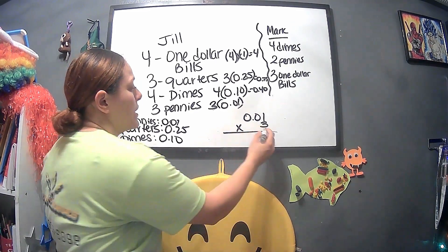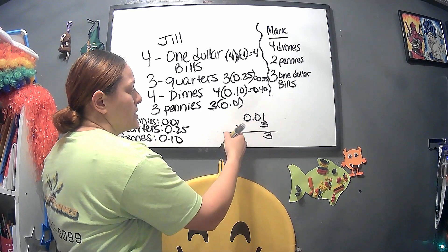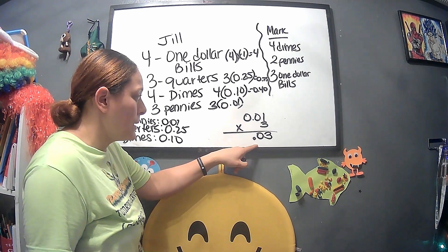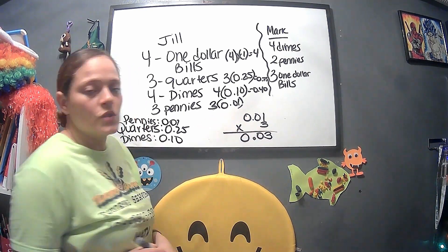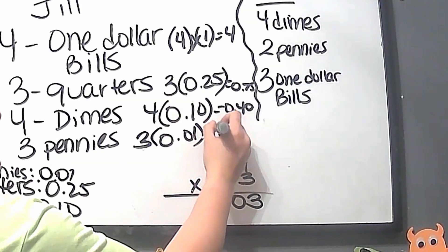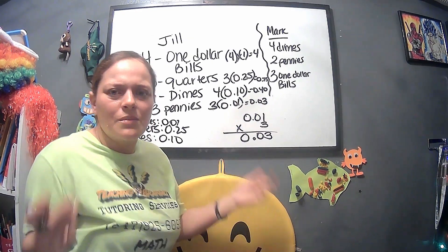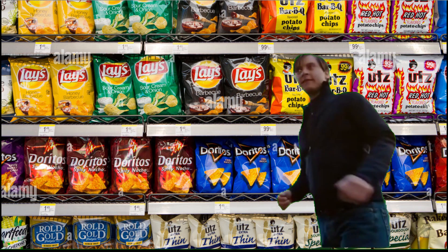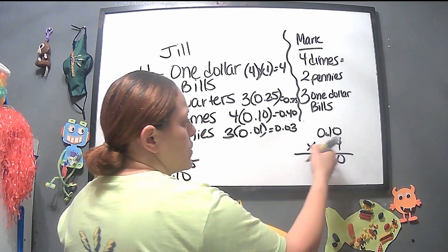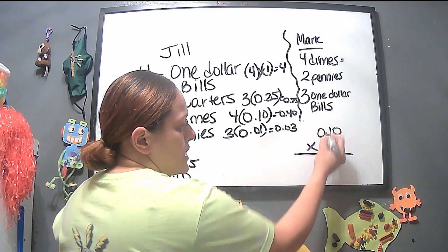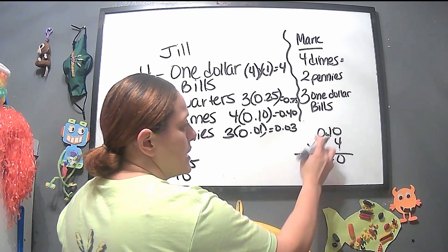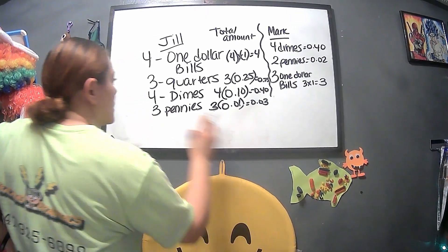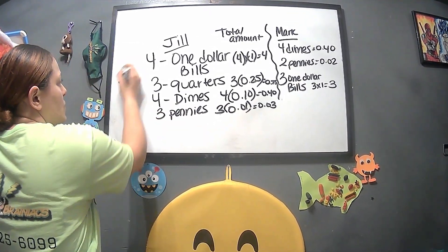Keep everything in order so you don't mix anything up. Keep the decimal point right there to hold the place. If you ever get confused, just think about when you're going to the supermarket to get your chips. So we have 40 cents. Now for the total, we're going to add it all up over here.